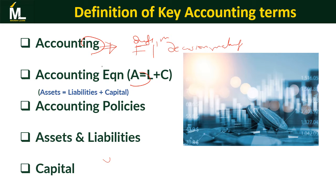The accounting equation is a mathematical description of the relationship between assets, liabilities, and capital. The equation is: Assets equals Capital plus Liabilities. We shall explore this in more detail when we come to constructing the balance sheet in the financial statements.